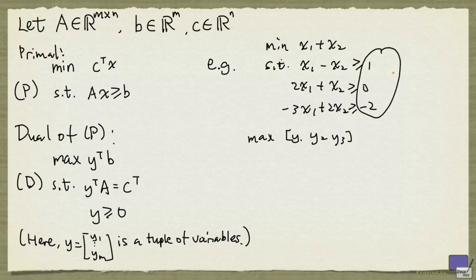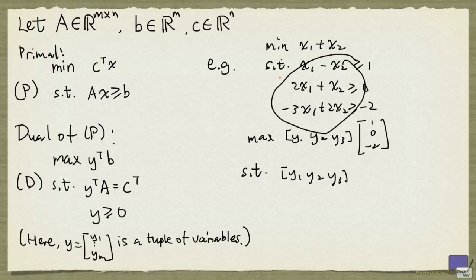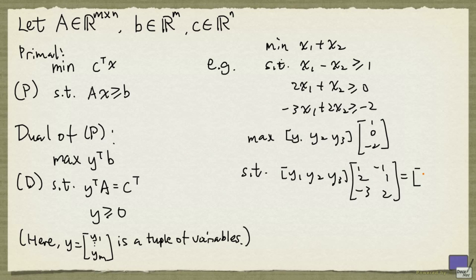Which is 1, 0, minus 2, and subject to y1, y2, y3, times the coefficient matrix of this system here. And C transpose comes from here.